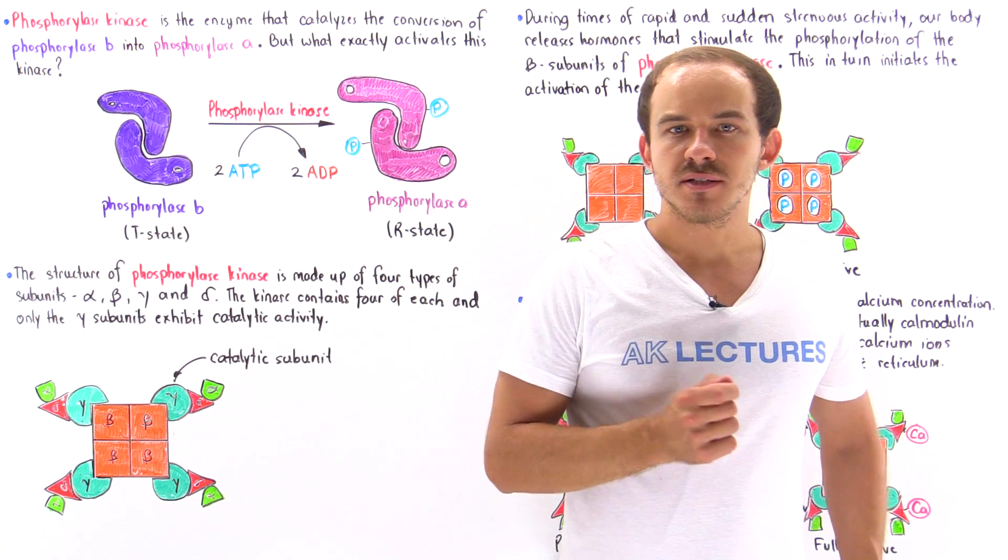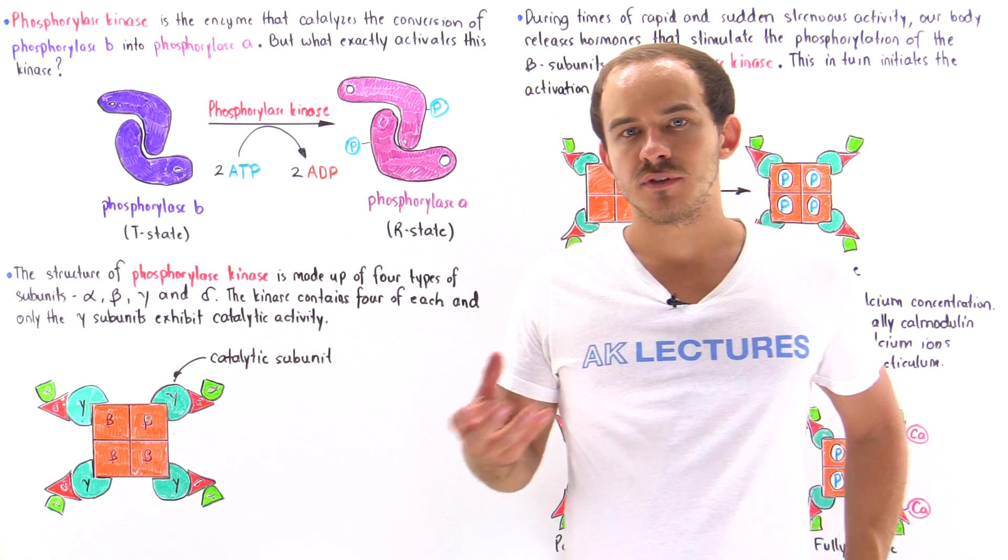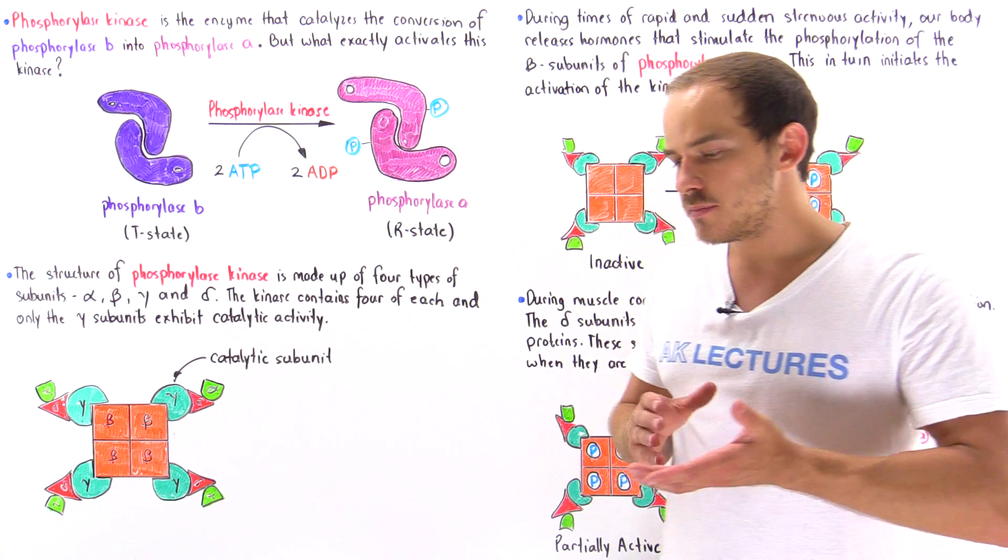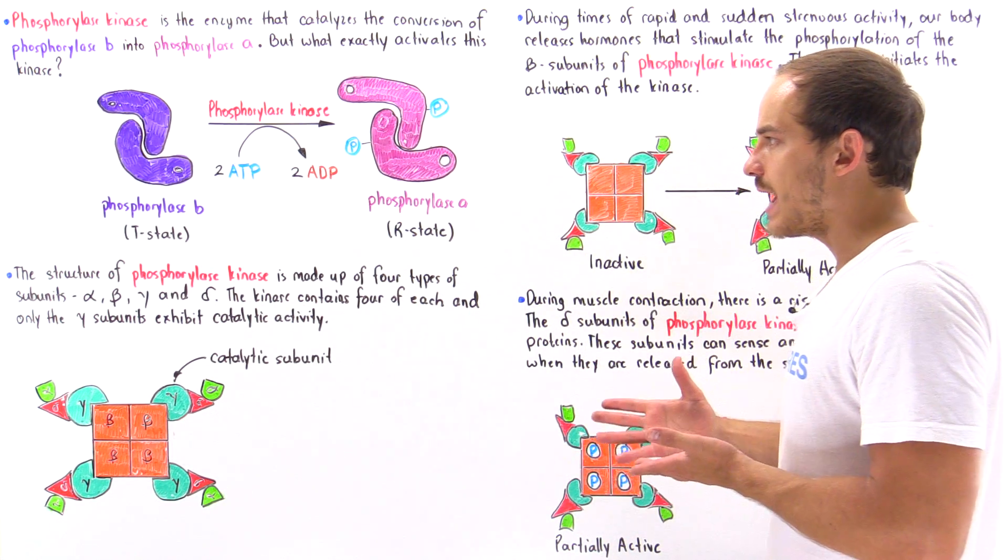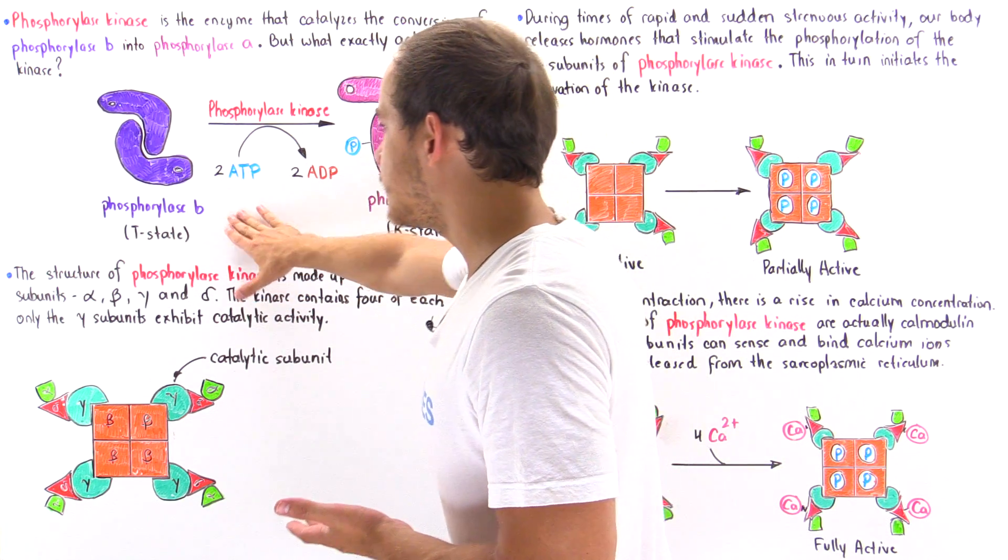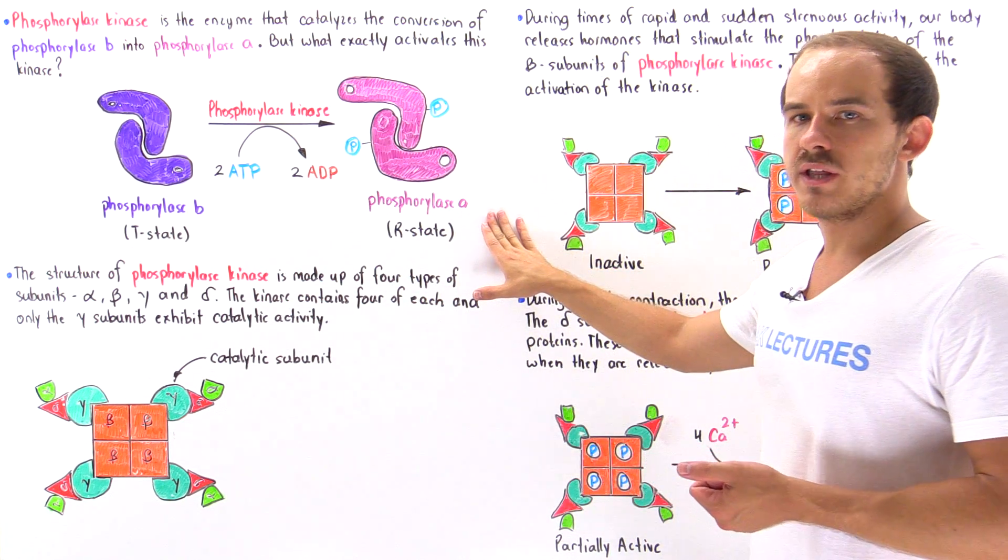In our discussion on skeletal muscle cells and the regulation of glycogen breakdown, we ultimately said that to initiate the process of glycogen breakdown, phosphorylase B has to be transformed into phosphorylase A.